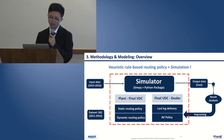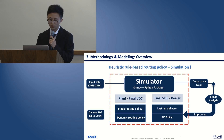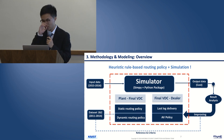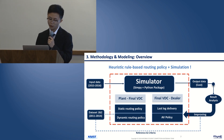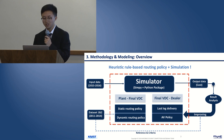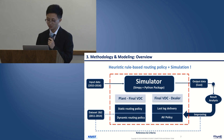Before running our simulator, we spent much effort on data processing. The vehicle requirement data given by GM was formulated as input for our simulator. Datasets one and two were analyzed to provide ideas for building the model and to provide reference criteria for our model output. Inside the simulator, from plant to final VDC, we set static and dynamic routing policies, and for part two, from final VDC to dealer, we set the last-leg delivery and AV policy. We can continuously compare output results with reference criteria to improve our simulator and routing policy.